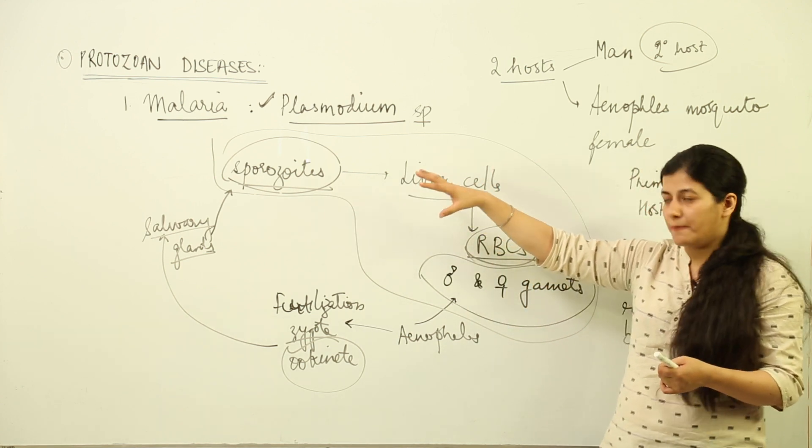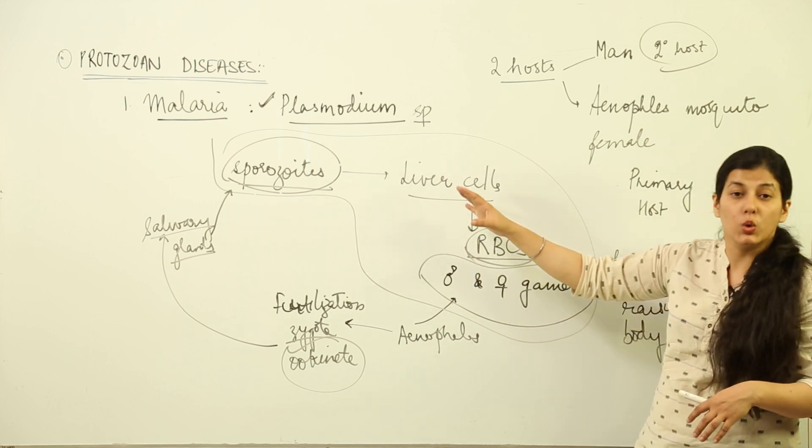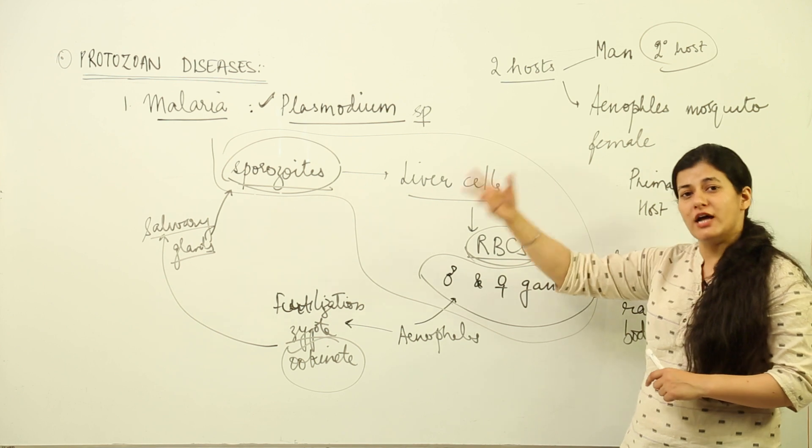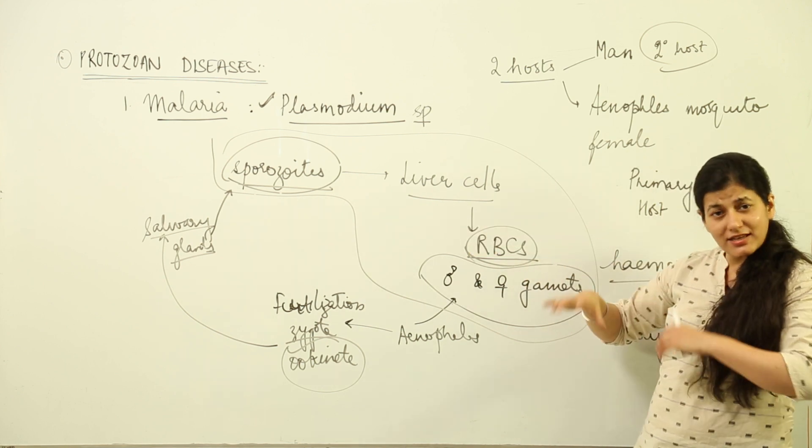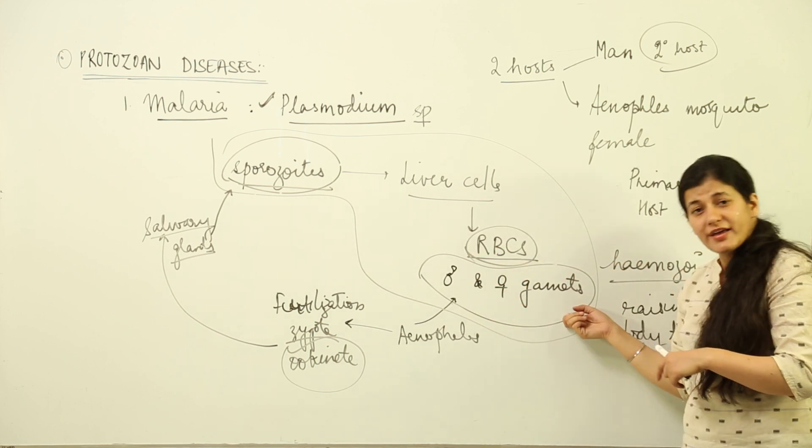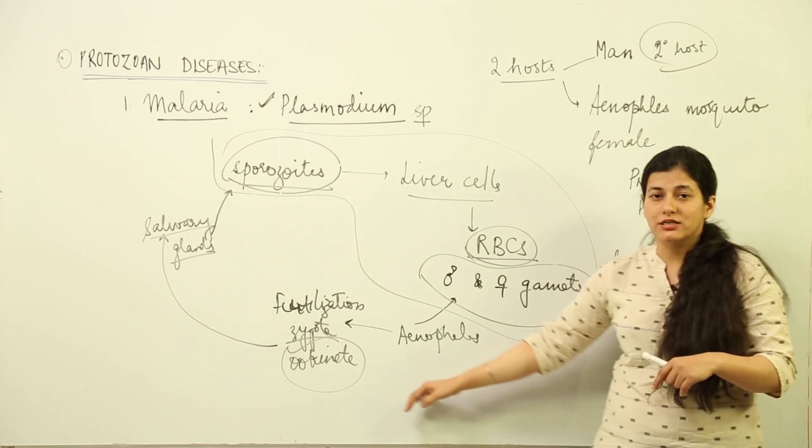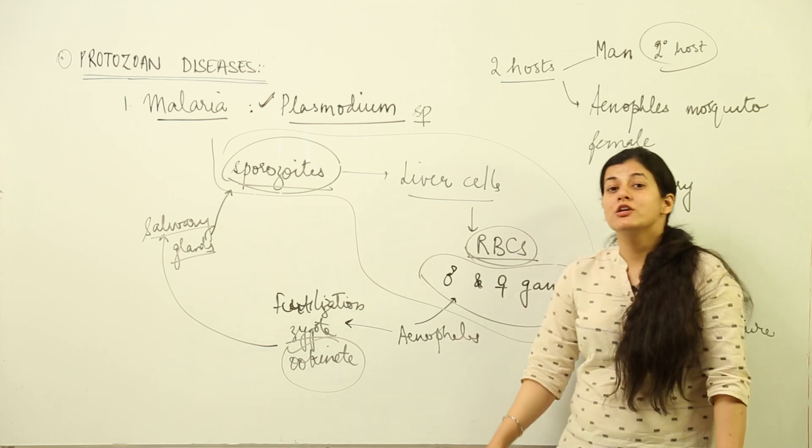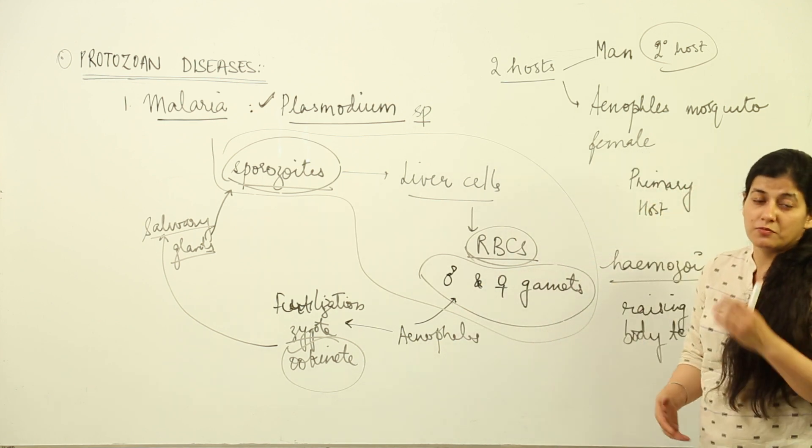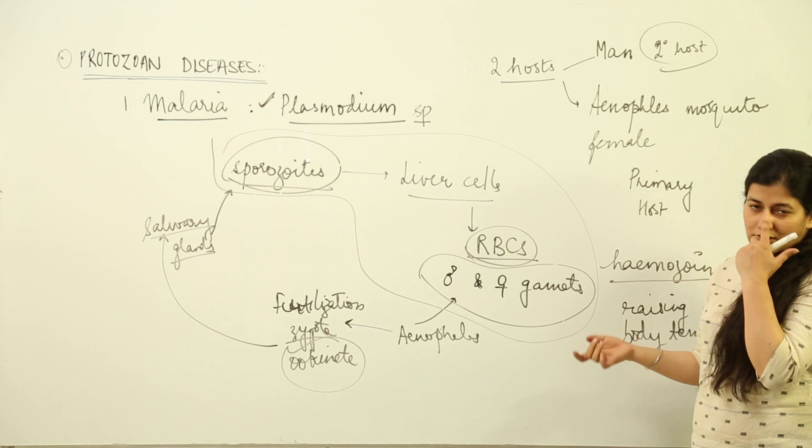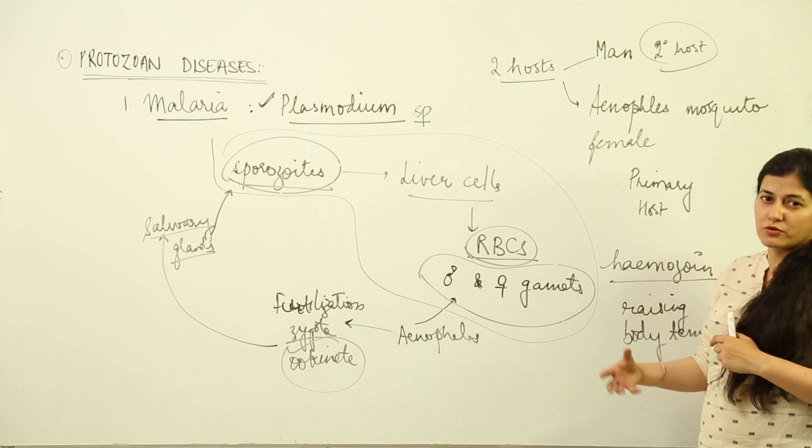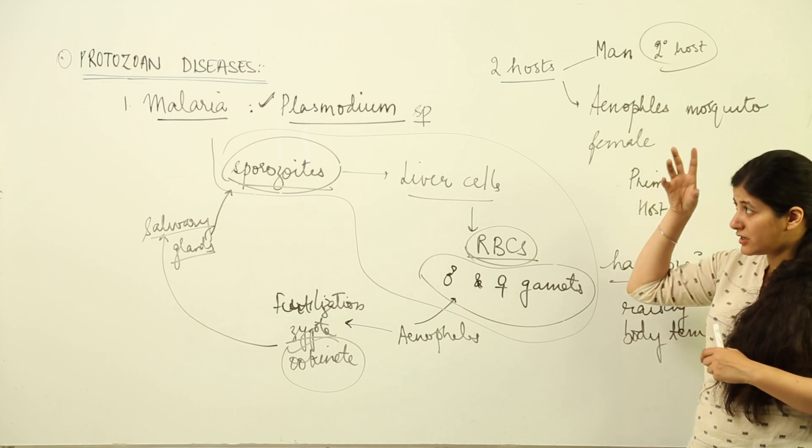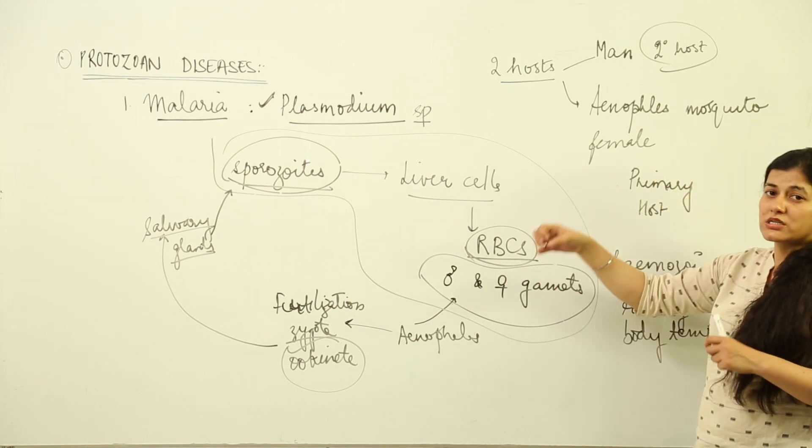The salivary glands store the sporozoites. Whenever this female mosquito bites any human individual, the sporozoites sneak into the bloodstream and reach the liver cells. Inside the liver cells, this being the asexual host or secondary host, they divide, move to RBCs, further divide, form gametes, and then gametes enter Anopheles again when she bites the infected individual. It's not the mosquito which is responsible—the mosquito itself is infected, but Plasmodium doesn't harm the mosquito. It harms human beings to such an extent that malaria was a big-time problem for human generations in the 19th century.